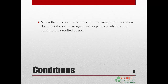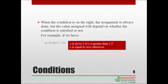When the condition is on the right, the assignment is always executed, but the value assigned will depend on whether the condition is satisfied or not. For example, this expression means that a is set to 2 if b is greater than 1.5, and a is equal to 0 otherwise.